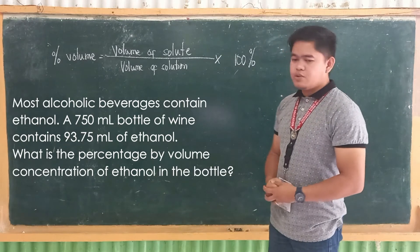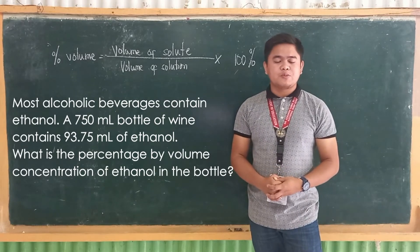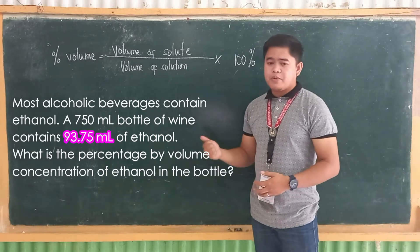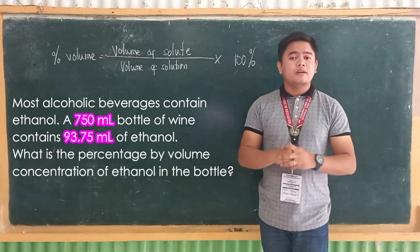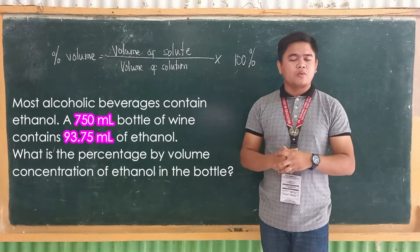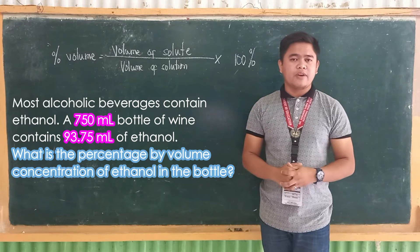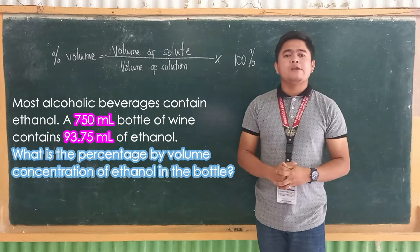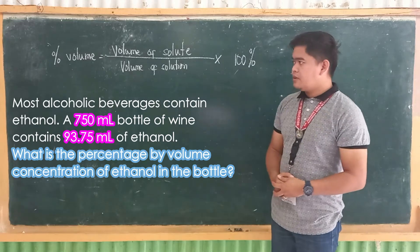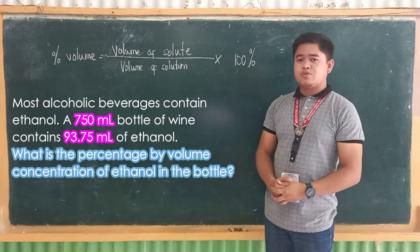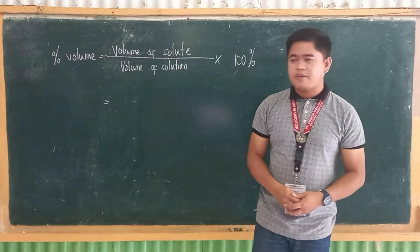So what are we going to do? First, identify the given quantities. The given in this problem are the volume of solute, which is 93.75 ml, and the volume of our solution, which is 750 ml. Next step: what is asked? The question is, what is the percent by volume concentration of ethanol in the bottle? Let us use the formula given. Substituting the given values to our formula, the volume of solute is equal to 93.75 ml, divided by the volume of solution, which is 750 ml, multiplied by 100%.